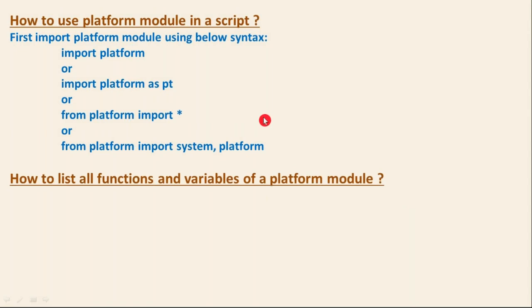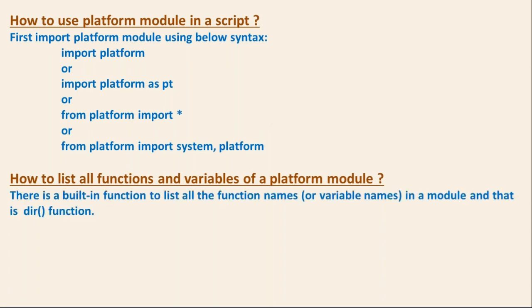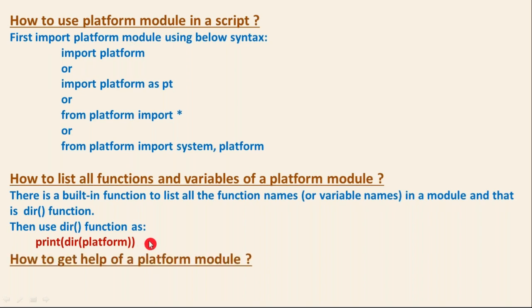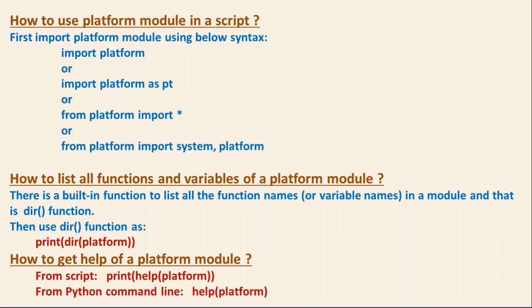Since platform is a module consisting of functions and variables, you can list all of them using Python's built-in 'dir()' function. You can print 'dir(platform)' from a script, or run 'dir(platform)' directly from the command line. To get the full documentation for any module, you can run 'help(platform)' from the command line or 'print(help(platform))' from a script.